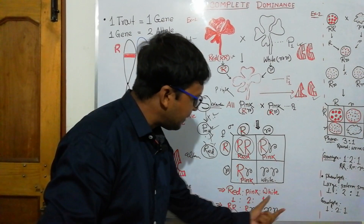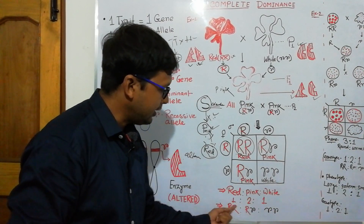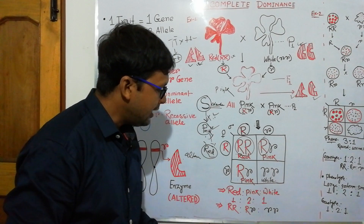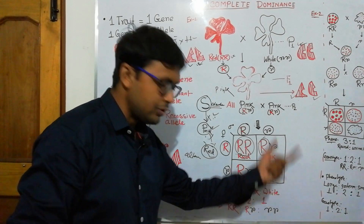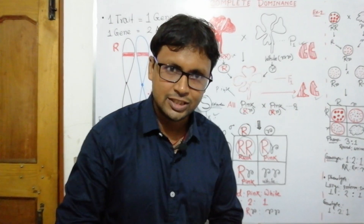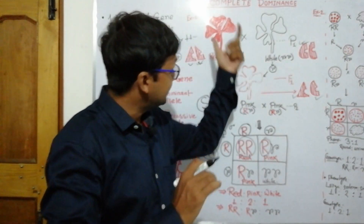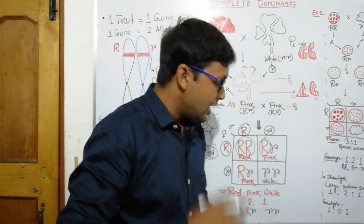In this case, the phenotypic ratio is red : pink : white = 1:2:1, and the genotypic ratio is also 1:2:1. So the phenotypic and genotypic ratios are the same in incomplete dominance — remember this.